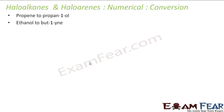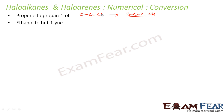Next conversion: propene to 1-propanol. If we can add a halogen to the terminal carbon, we can then replace it with OH. To add bromine at the terminal (less substituted) carbon, we must follow anti-Markovnikov addition. The only option is HBr in the presence of peroxide.